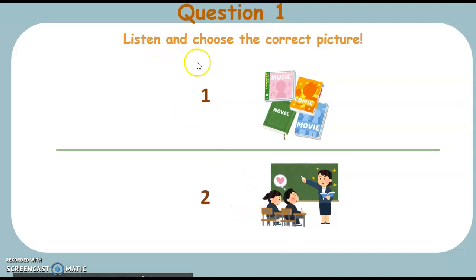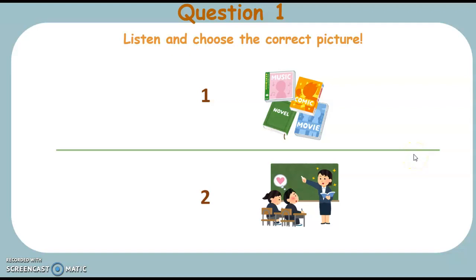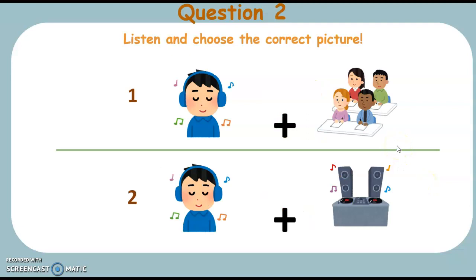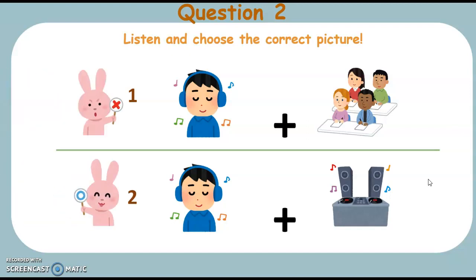Okay, this is question one. Listen and choose the correct picture. The first question is: 有声书. Yay! Great job! Okay, this is question two. Listen and choose the correct picture. This one is: 听课. Yay! Nice job!